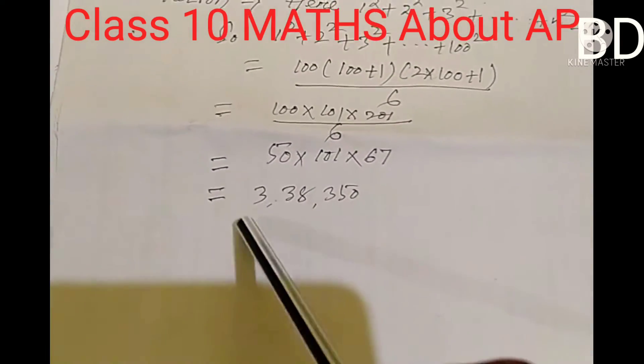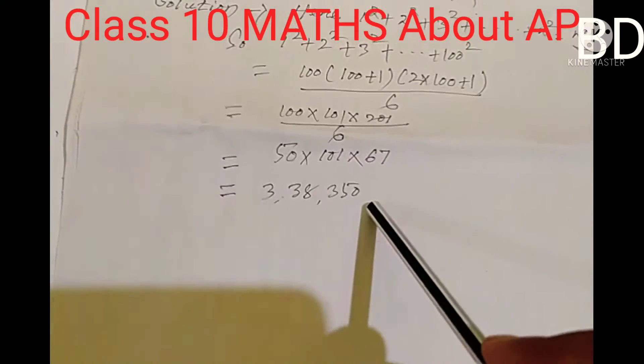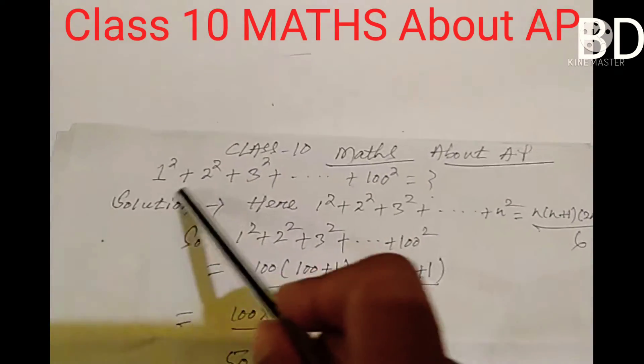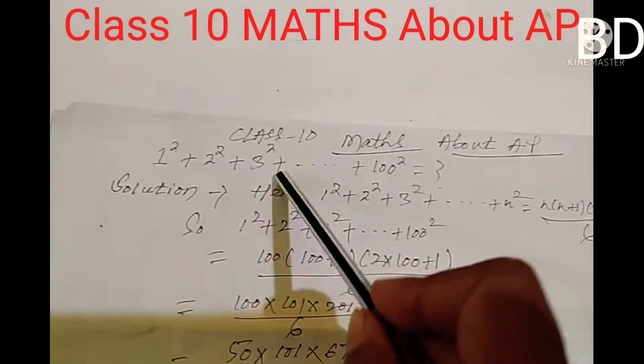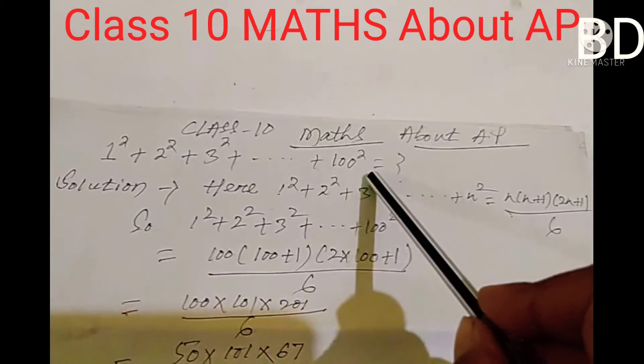Finally, we get 338,350. In this way, we can solve the problem 1 squared plus 2 squared plus 3 squared plus dot dot dot plus 100 squared.